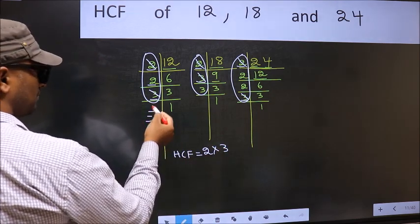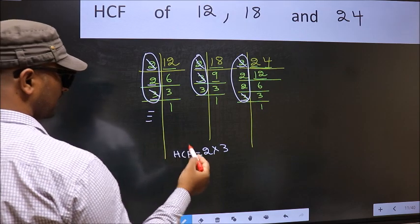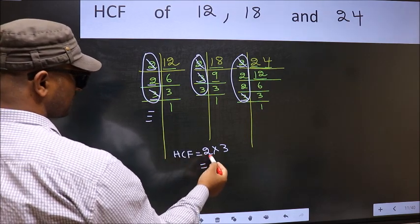No more numbers have been left out. Therefore, our HCF is 2 into 3, 6 is our HCF.